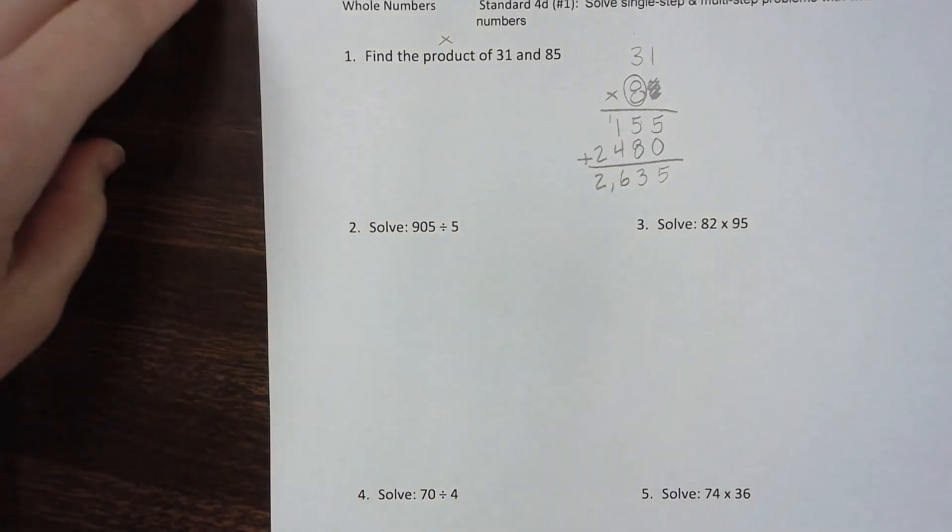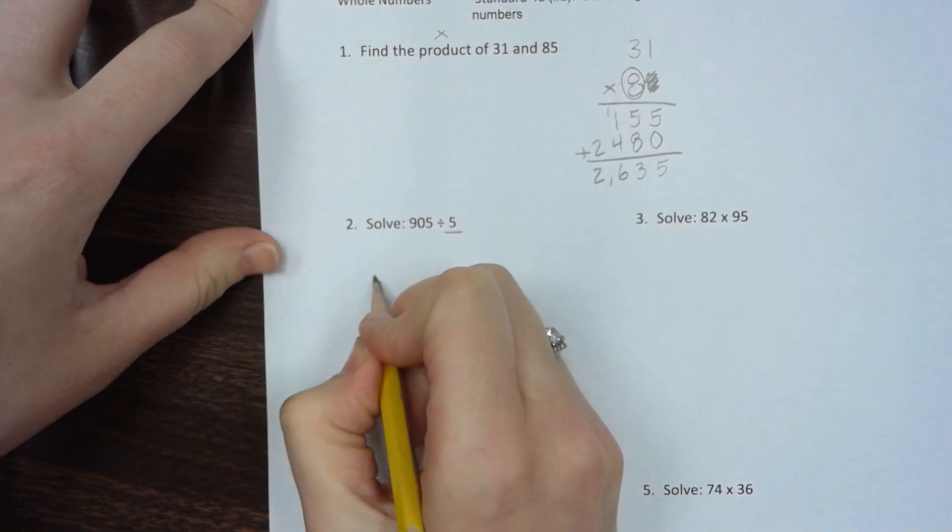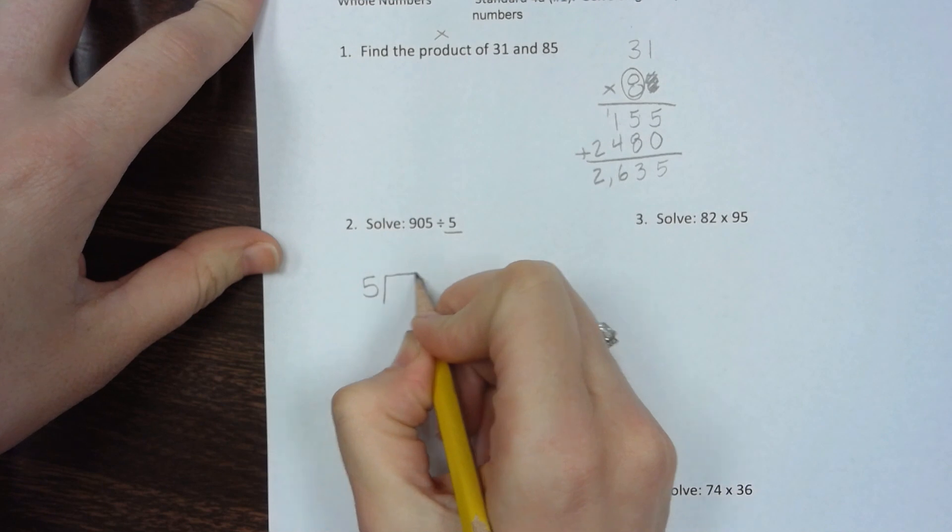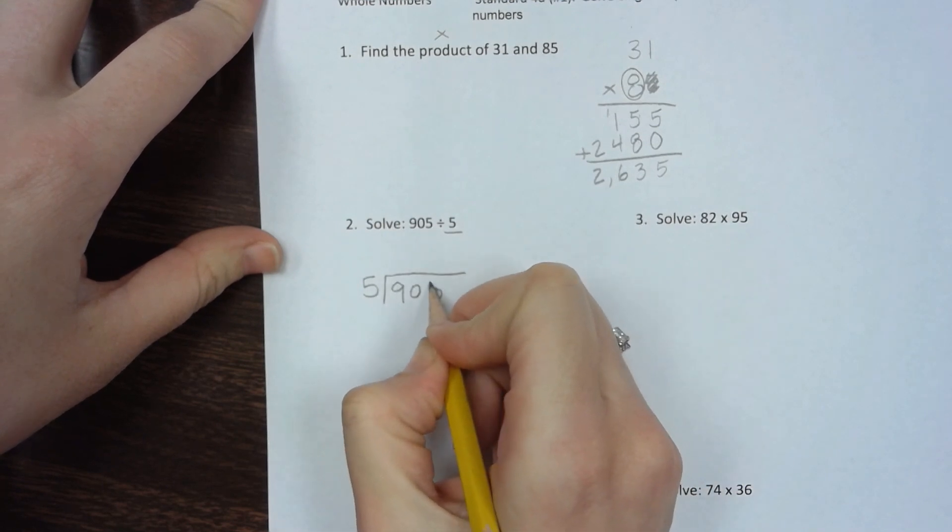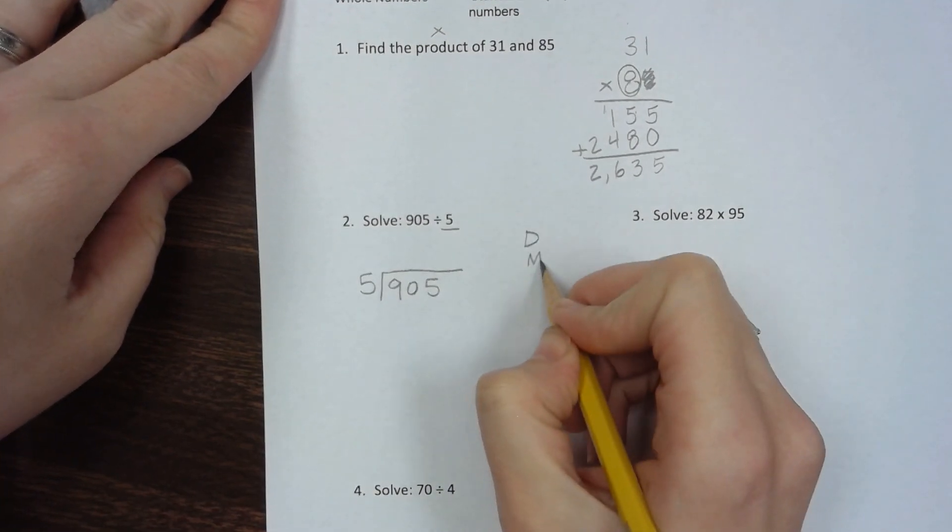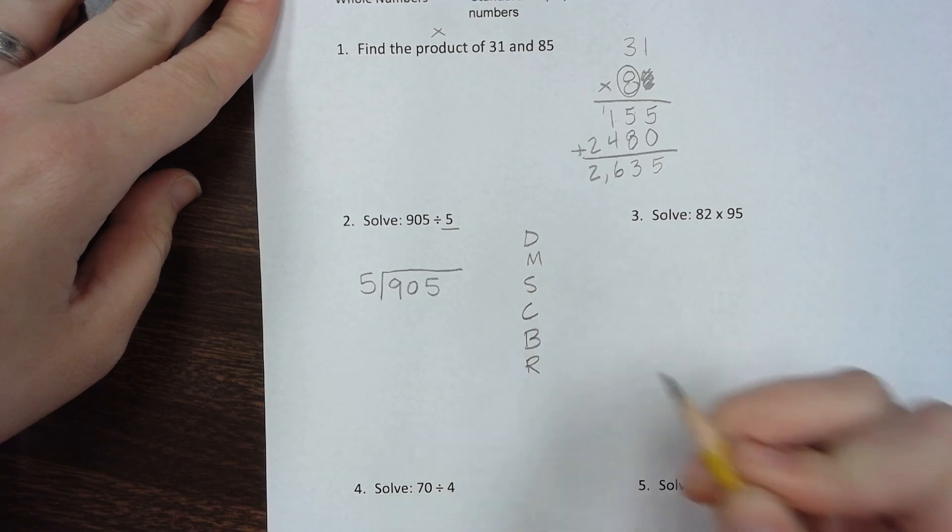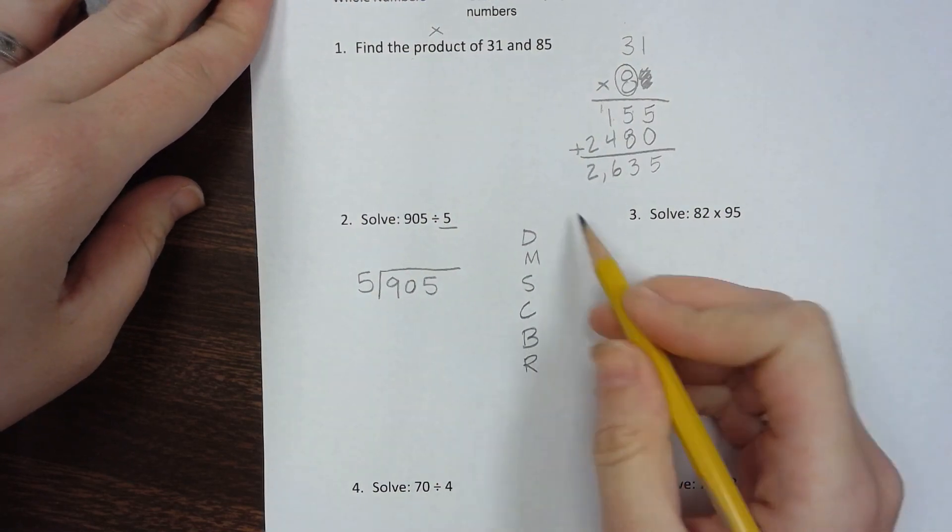Number two is 905 divided by 5. We'll set this up as long division - 5 goes on the outside, 905 inside. Remember our steps: divide, multiply, subtract, check, bring down, and repeat until done.